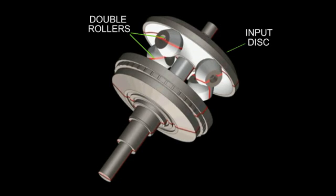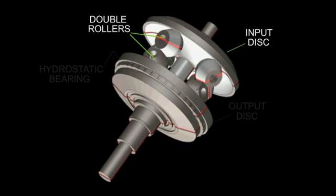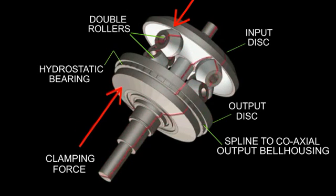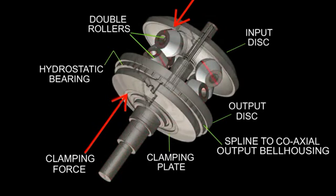The rollers are arranged in pairs within the toroidal cavity. They are clamped between the input and output disc by high pressure oil supplied to the hydrostatic bearing under the clamping plate.